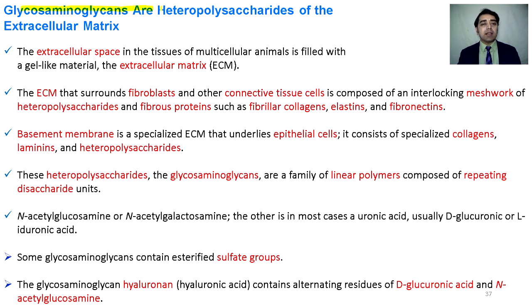Glycosaminoglycans are heteropolysaccharides of the extracellular matrix. The space between cells is filled with a material called the extracellular matrix, which surrounds fibroblasts and connective tissue. It consists of mesh-like heteropolysaccharides and fibrous proteins.